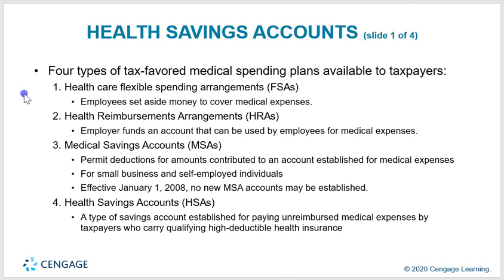Healthcare flexible spending arrangements, or FSAs, allow employees to set aside money to cover medical expenses. Health reimbursement arrangements, or HRAs, are employer-funded accounts that can be used by employees for medical expenses.